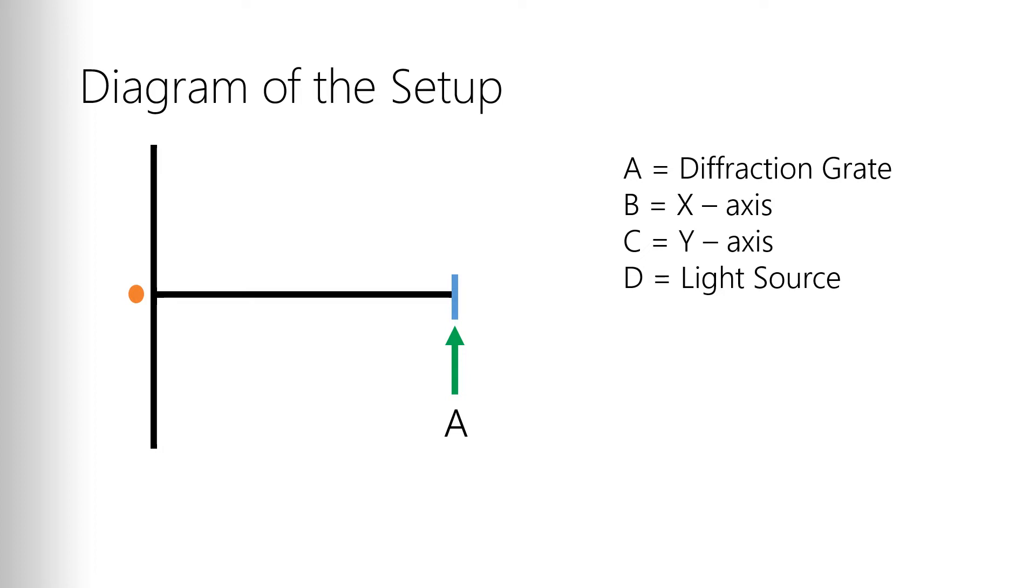It's a small plastic piece that's got thousands of little lines etched in per centimeter and then you would glance down at the light source which is at the far end down the length of one of the axes.